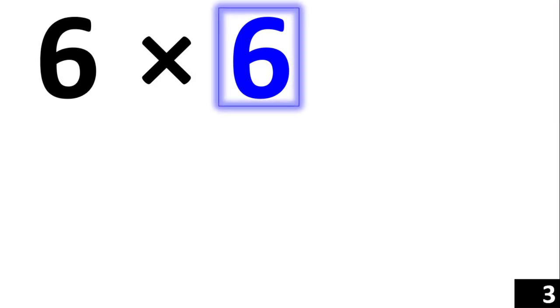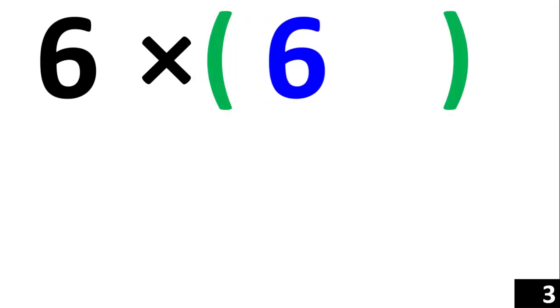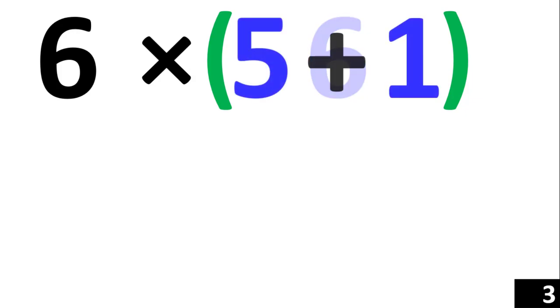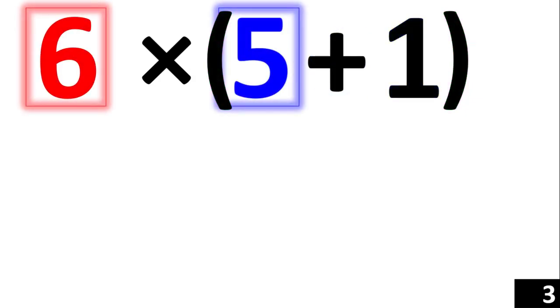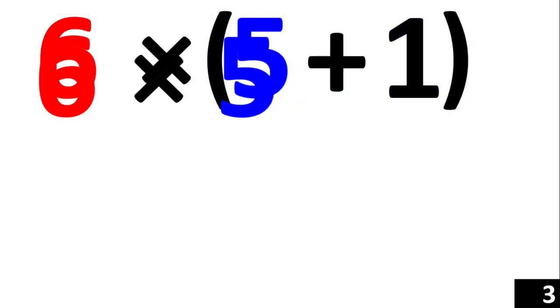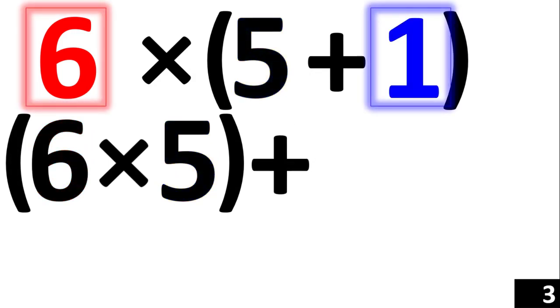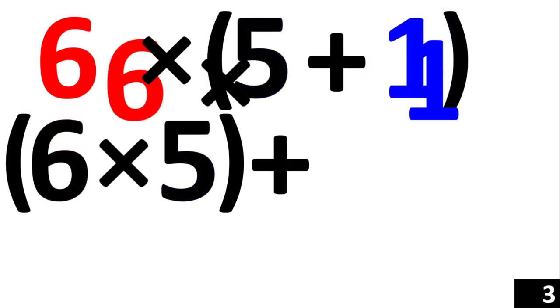6 times 6 is the same thing as 6 times 5 plus 1. Using the distributive property, we now have 6 times 5 plus 6 times 1.